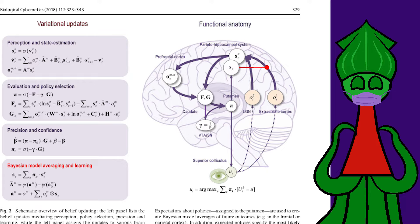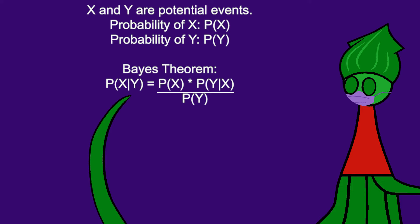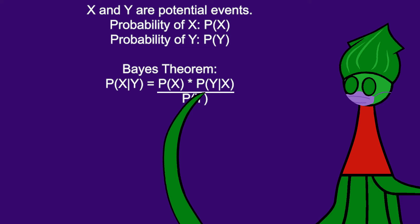If X and Y are events, we can write the probability of X happening as P(X), and the probability of Y happening as P(Y). This is Bayes' theorem. The probability of X happening, assuming Y is happening, is equal to the probability of X times the probability of Y assuming X divided by the probability of Y. For example, rolling a die, a regular old die.